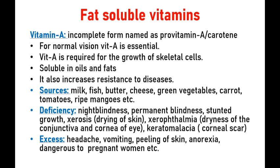First fat soluble vitamin is Vitamin A. Its incomplete form is named pro-vitamin A or carotene, while the complete form is called Vitamin A. Vitamin A is very important for normal vision. It is required for the growth of skeletal cells. It is soluble in oils and fats. It also increases resistance to diseases — meaning it helps develop immunity power in the body.